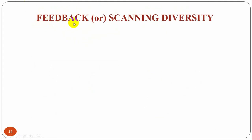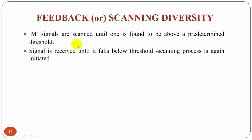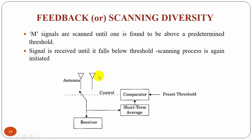The next type of receiver diversity is feedback diversity, or scanning diversity. Scanning diversity is very similar to selection diversity, except that instead of always using the best of M signals, the M signals are scanned in a fixed sequence until one is found to be above a predetermined threshold. The signal is received until it falls below the threshold, at which point the scanning process is again initiated. The resulting fading statistics are somewhat inferior to those obtained by other methods, but this is very simple to implement as we need only one receiver.